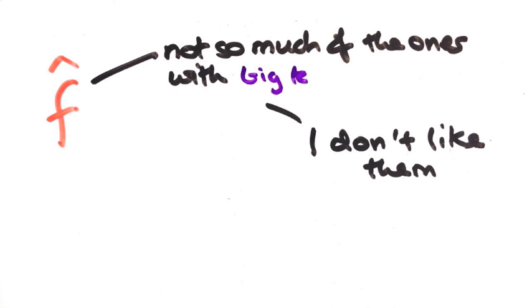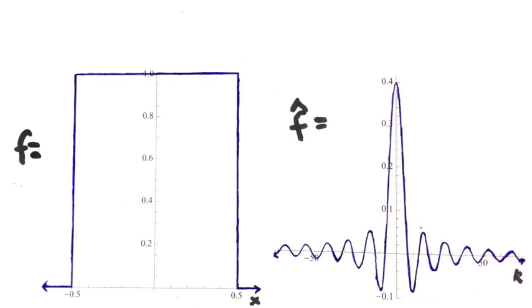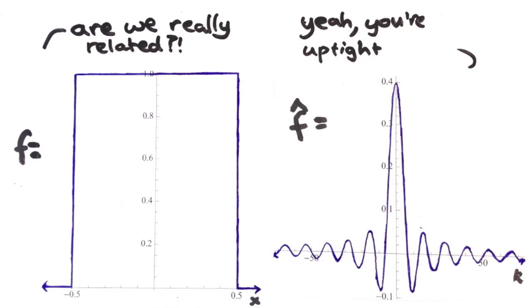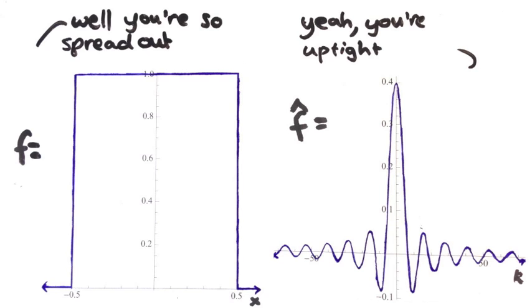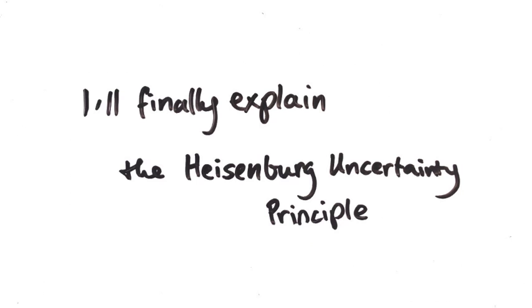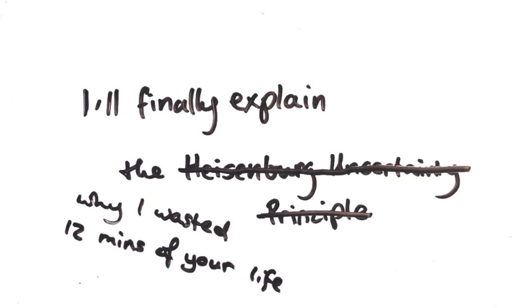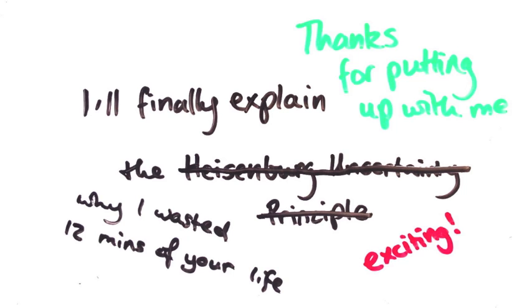So that's how a Fourier transform relates to its function. The surprising fact is that there are some interesting links between the two. Next episode, we'll explore this relationship. In particular, I'll explain why the Fourier transform makes the Heisenberg uncertainty principle happen. So I'll see you for that if you're interested.